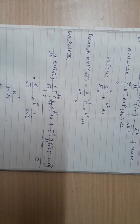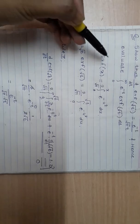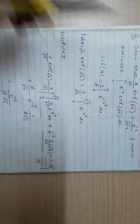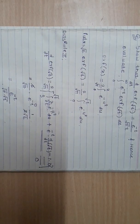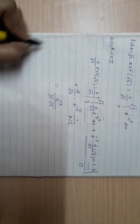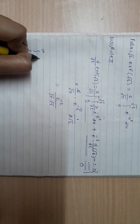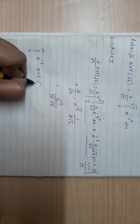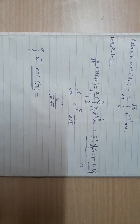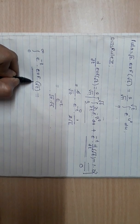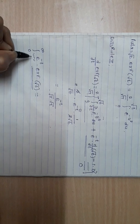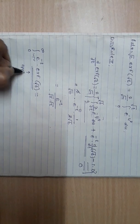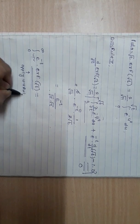Now using this result, we evaluate ∫₀^∞ e^(−t) · erf(√t) dt. To evaluate this, I will use the UV (integration by parts) rule. Since I know the derivative of erf(√t), I will take erf(√t) as the function to differentiate and e^(−t) as the function to integrate.